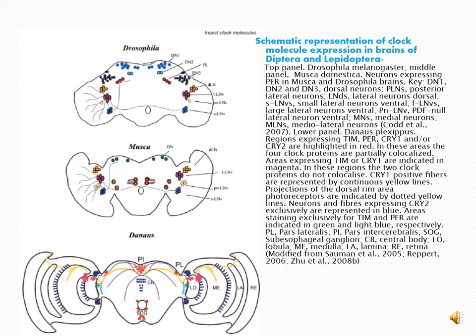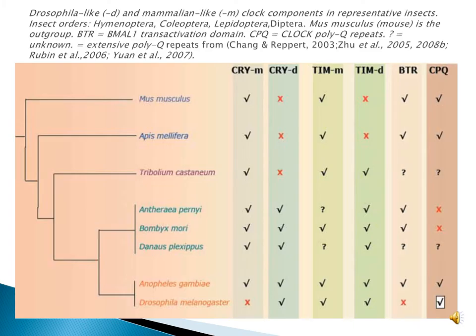This is the schematic representation of CLK molecule expression in brains of dipterans and lepidopterans. The first is Drosophila, the second is Musca and the third is Danaus. There are different mechanisms of action concerning different transcriptional and translational factors and proteins shown here. The similarities and differences of mammalian and Drosophila genes concerning the biological clock mechanism of action are detailed here.